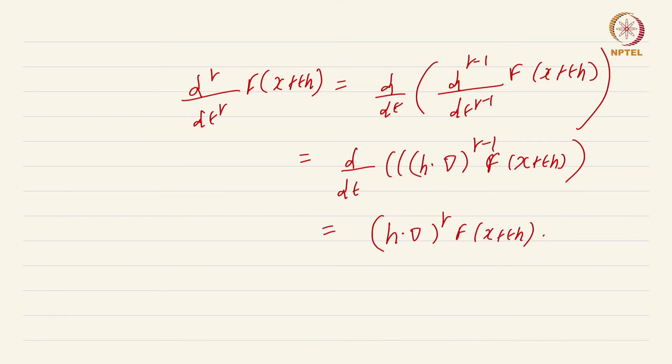The proof was just essentially symbol pushing where we have just used the induction hypothesis as well as the base case of the induction. Now in one of the exercises you are asked to expand out what this h dot grad power r is going to look like in terms of the higher order partial derivatives. Now proving Taylor's theorem is a piece of cake. All the hard work has been pushed inside this lemma.